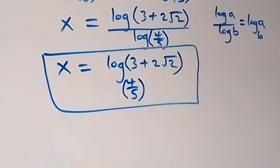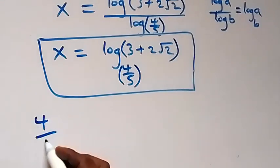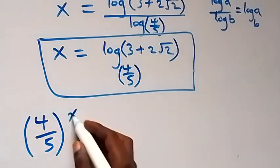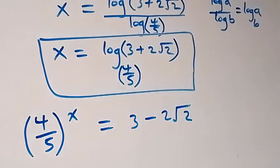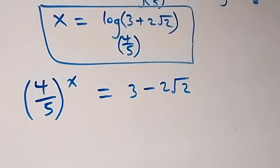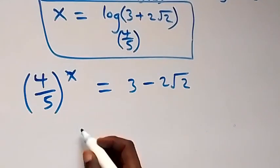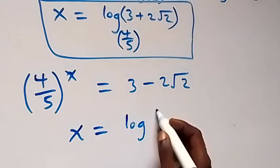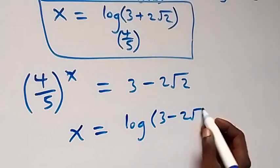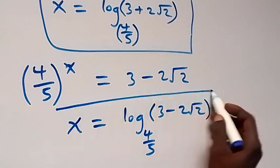Equally, from the second case, we have 4 over 5 raised to power x equals to 3 minus 2 root 2. This is similar to the first one. It implies that when we solve and take the log on both sides, x will now be equal to log of 3 minus 2 root 2 to base 4 over 5. So we have another solution for x here.